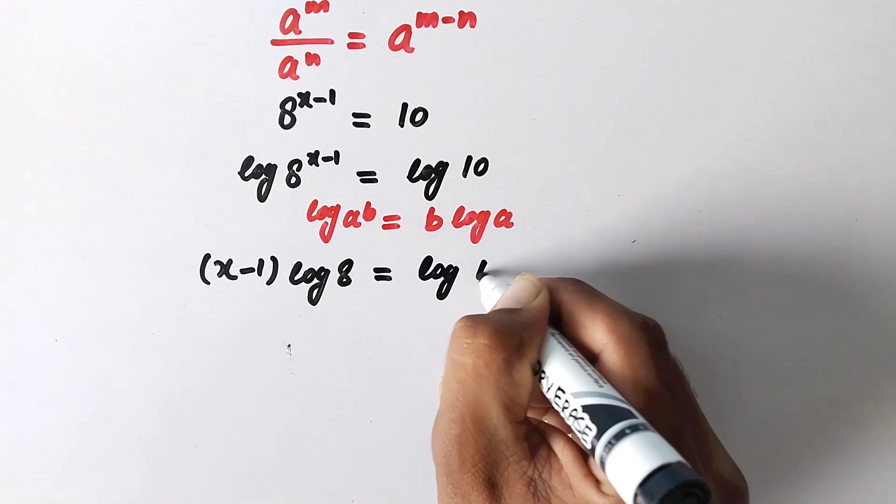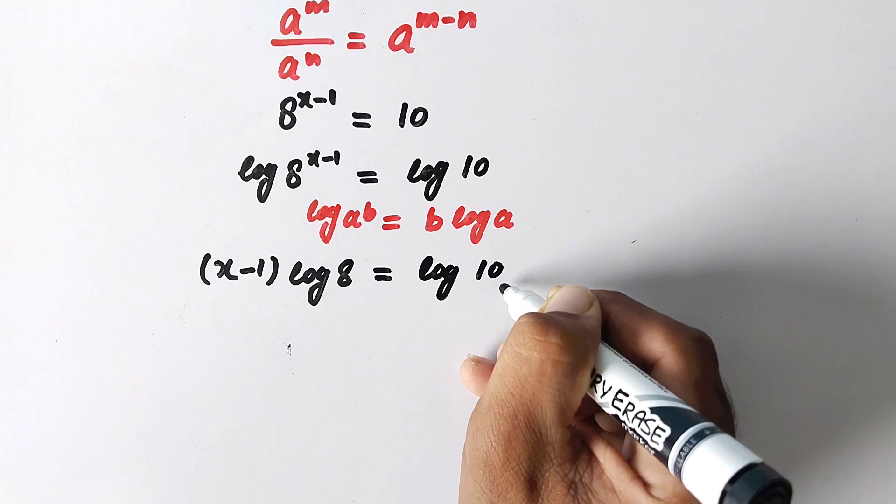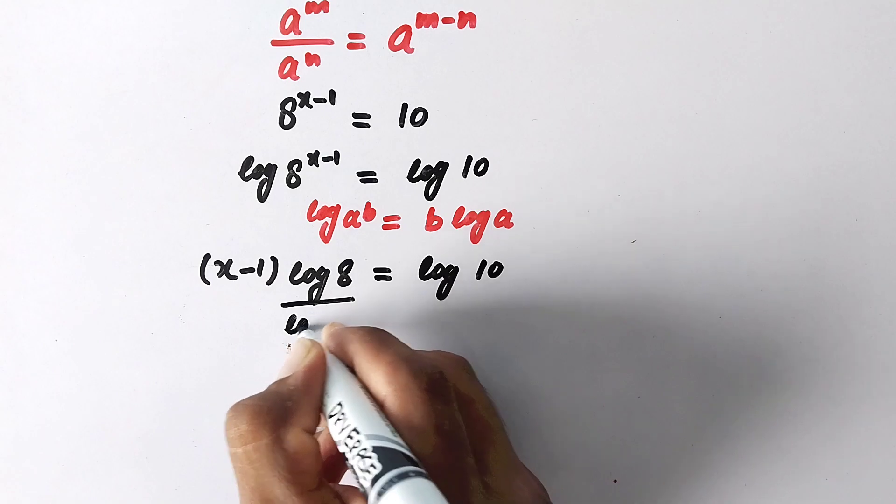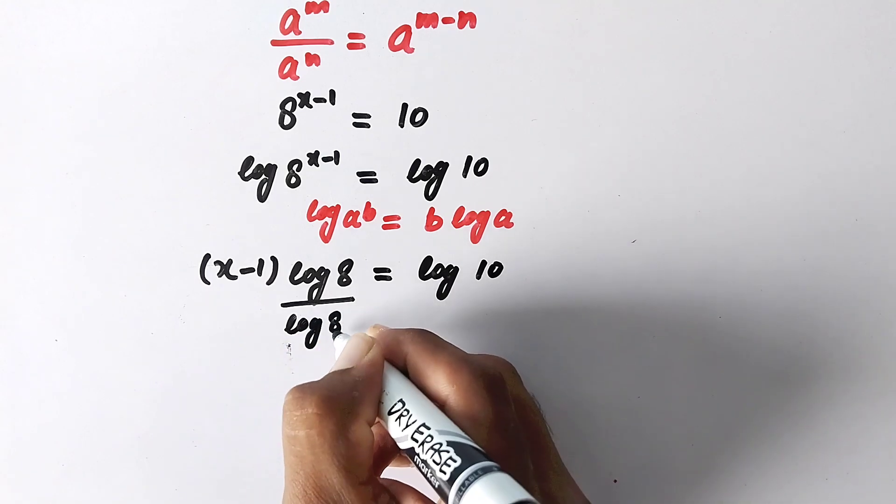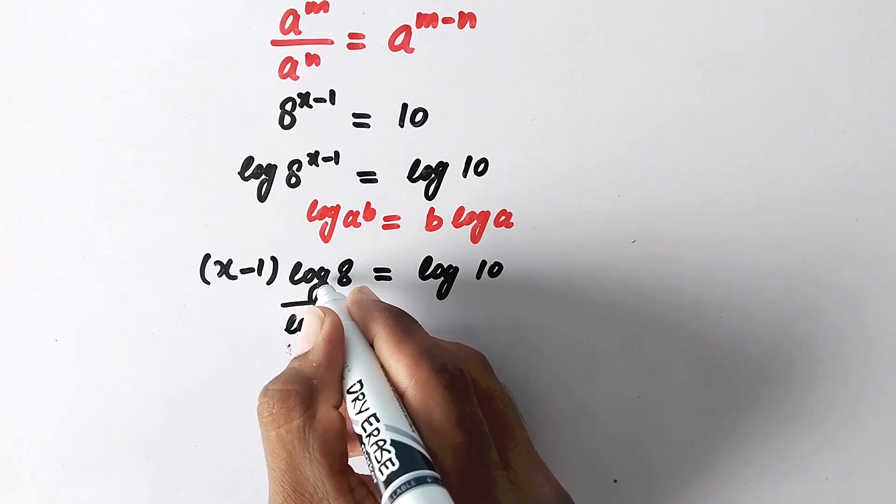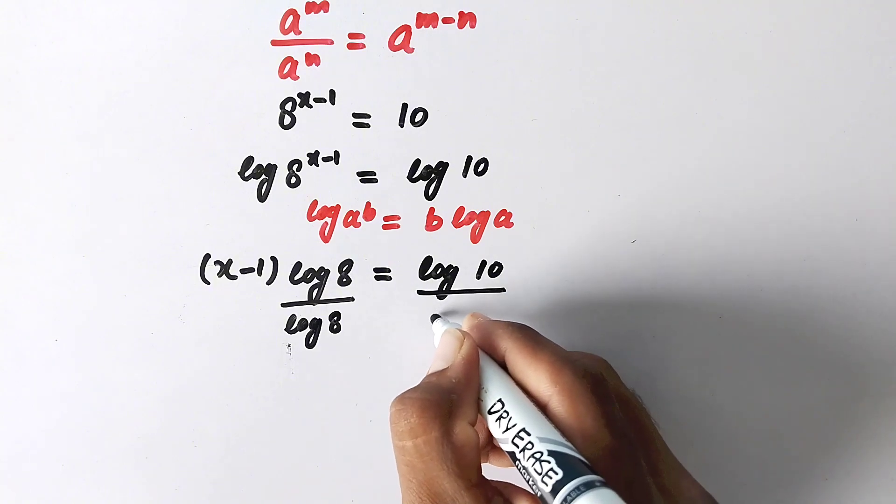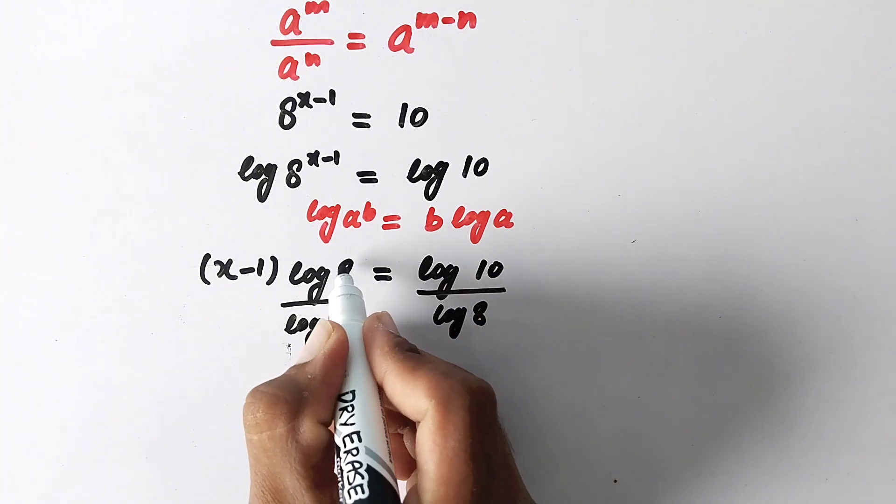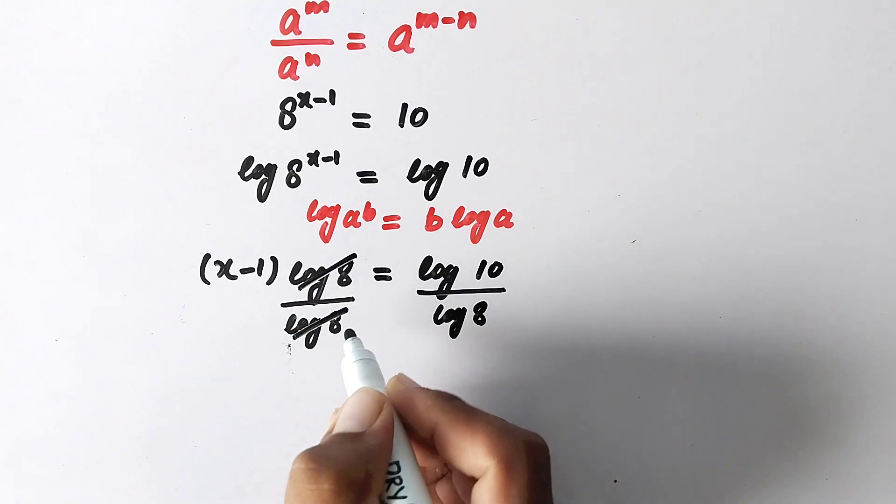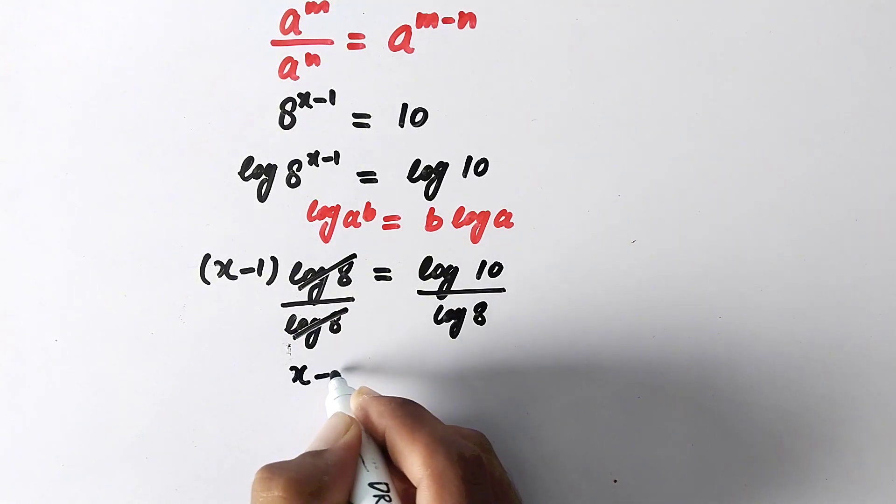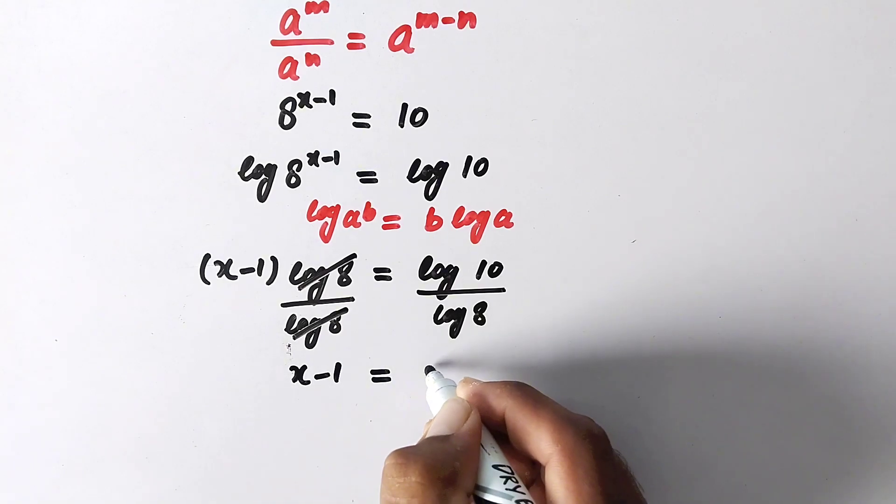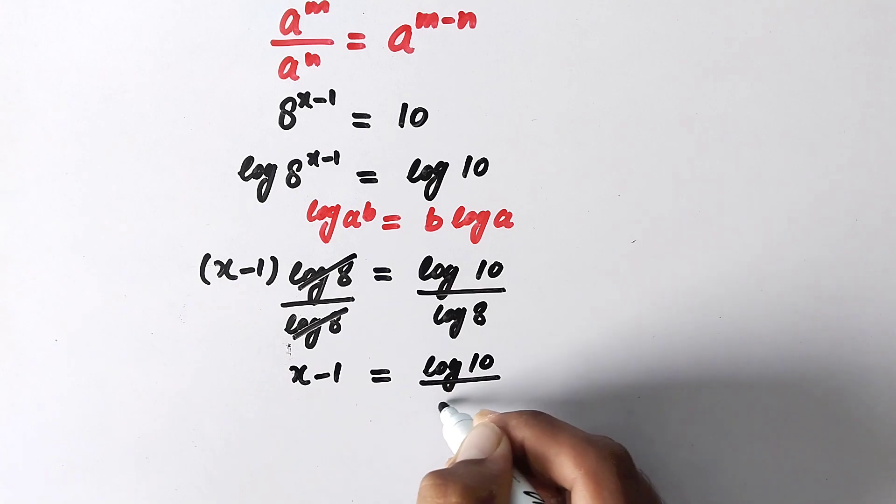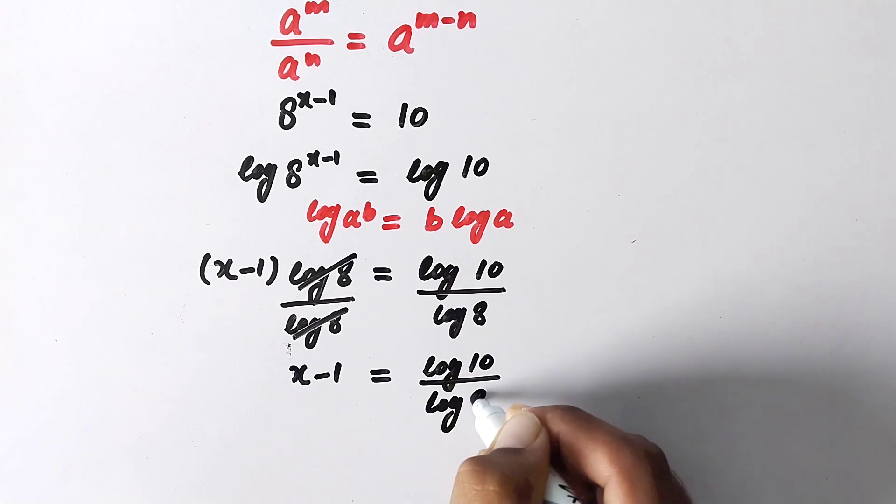In the next step, we will divide both sides of the equation by log of 8 to eliminate this log 8. So this log of 8 will cancel out, and we are left with x minus 1 is equal to log of 10 over log of 8.